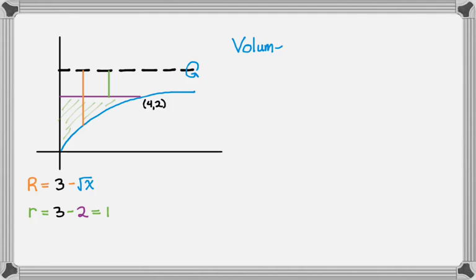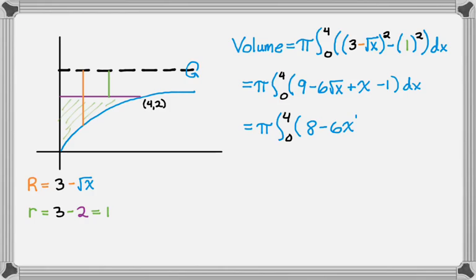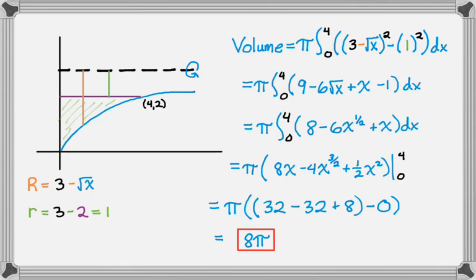Setting up the volume integral: pi times the integral from 0 to 4 of the big radius squared minus the smaller radius squared. Expanding and cleaning up the integrand — always clean up before integrating — I change the radical to a rational exponent and find the antiderivative. Substituting in bounds, with 0 again working out nicely, my final answer is 8π. So I actually got the same answer for both problems — kind of a coincidence.